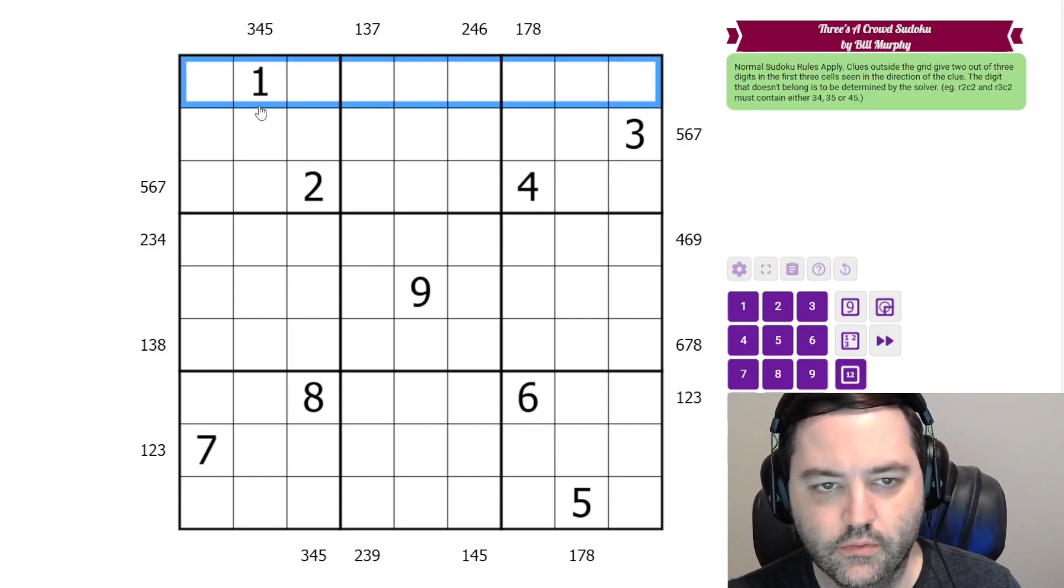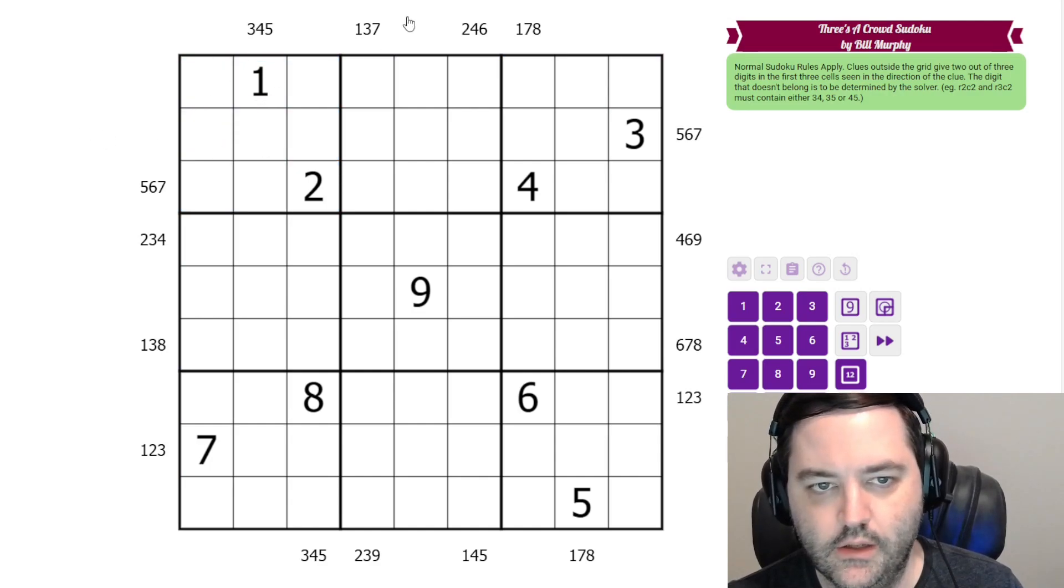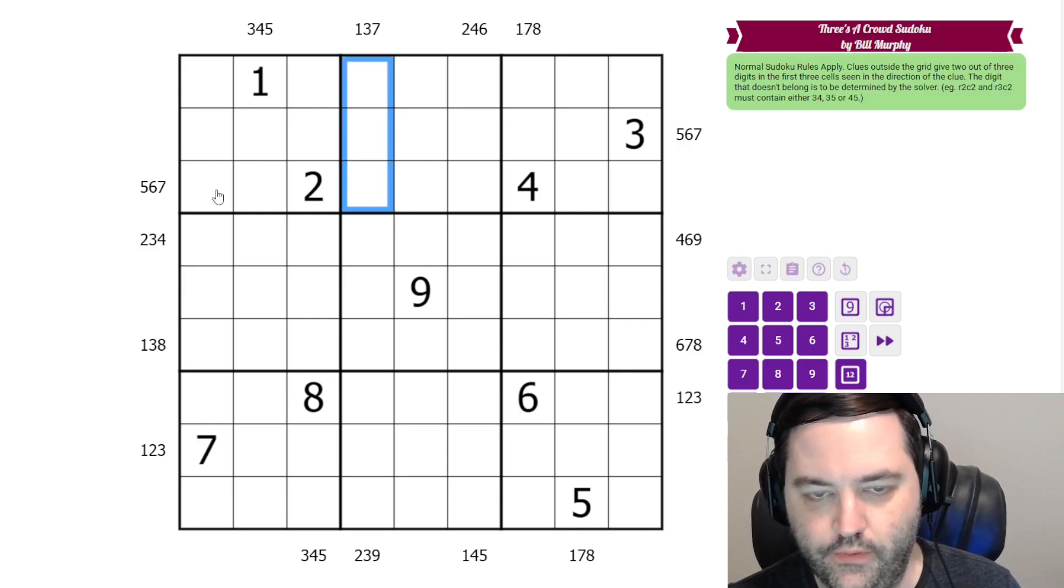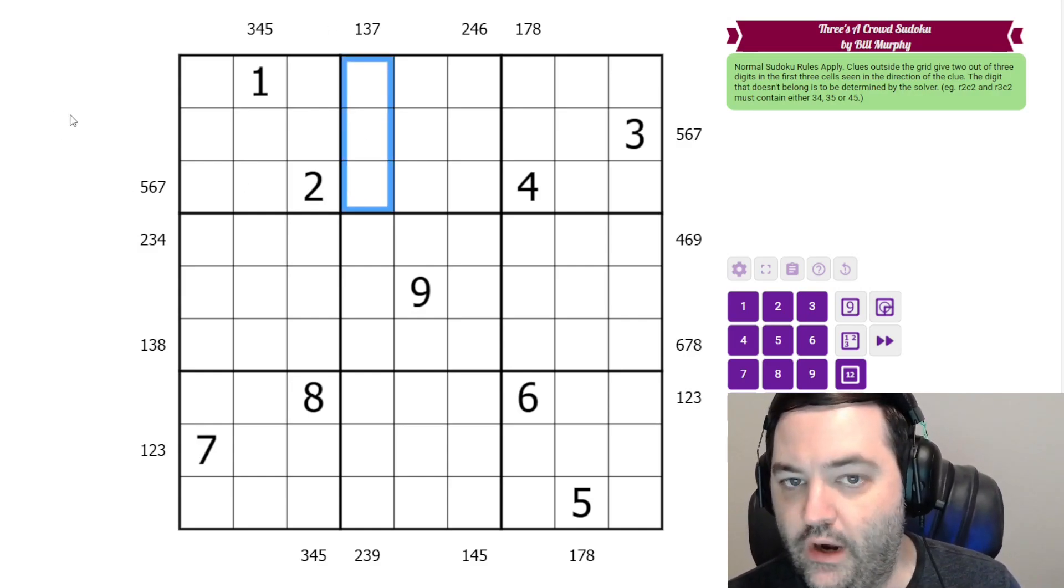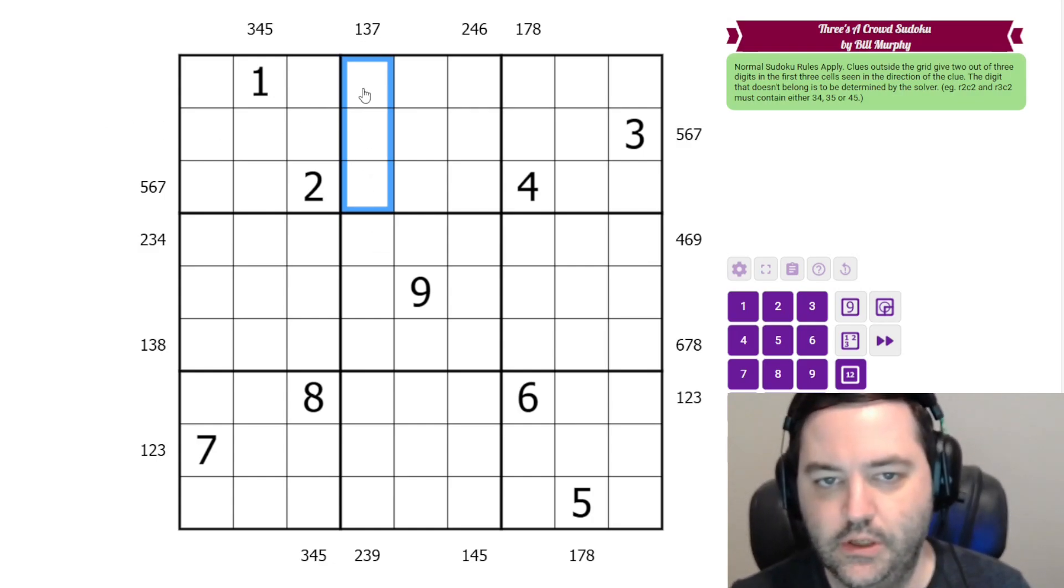So normal Sudoku rules: one to nine in each row, column, and three by three box. Additionally, we have some clues outside the grid. Normally when we have a clue outside the grid, say this one - three, seven - for outside Sudoku, that would be telling us that all three of the digits appear in the first three cells of this column.